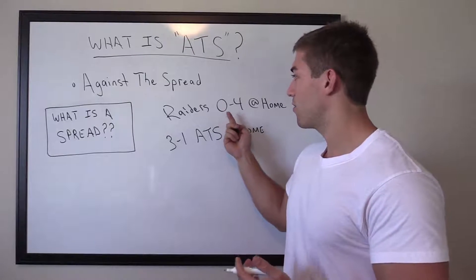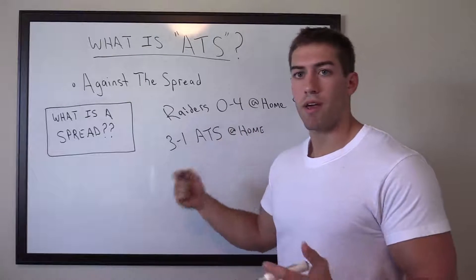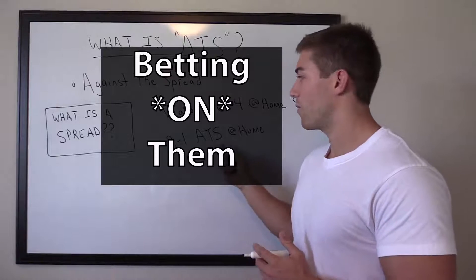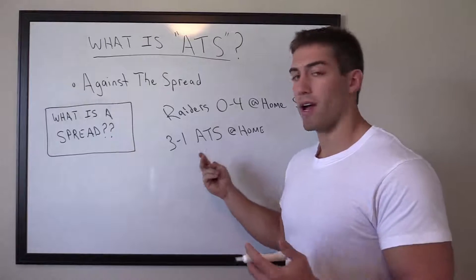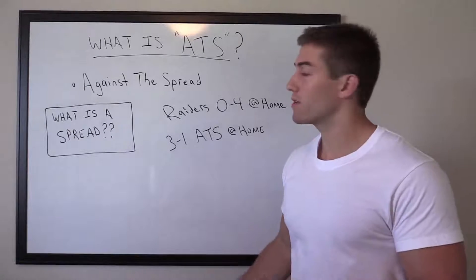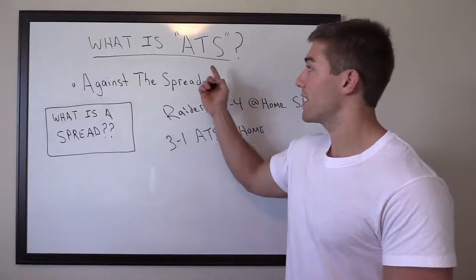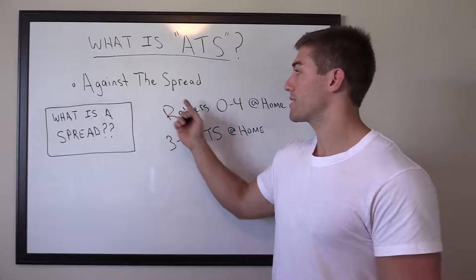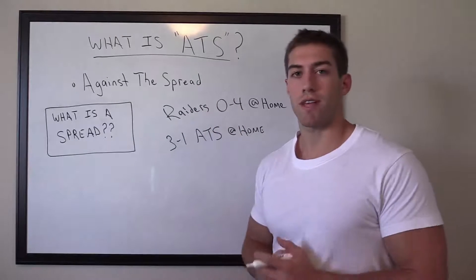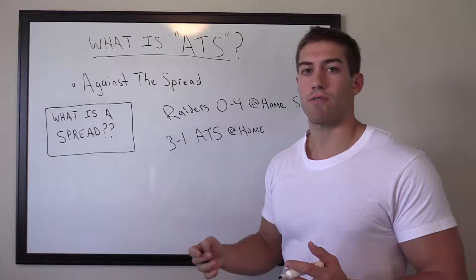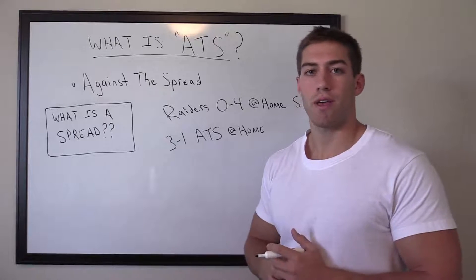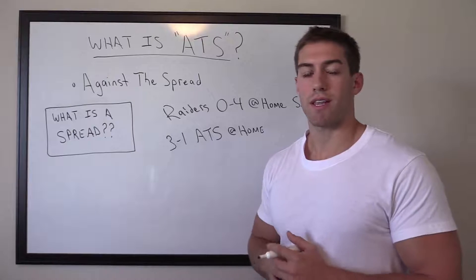So although they're getting crushed at home 0-4, if you're betting against them and they're 3-1 against the spread, that's all we care about as bettors. So again, ATS is simply against the spread — you'll see it often, like for example the Steelers are 5-2 against the spread at home, something like that.